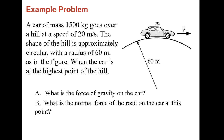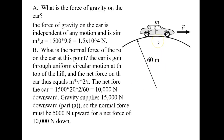Last question: a car of mass 1,500 kilograms goes over a hill at a speed of 20 meters per second. We have the radius. We want to figure out the force of gravity on the car given our mass. The force of gravity is just mass times acceleration of gravity: 1,500 times 9.8 gives you the force of gravity on the car — that's your downward force.